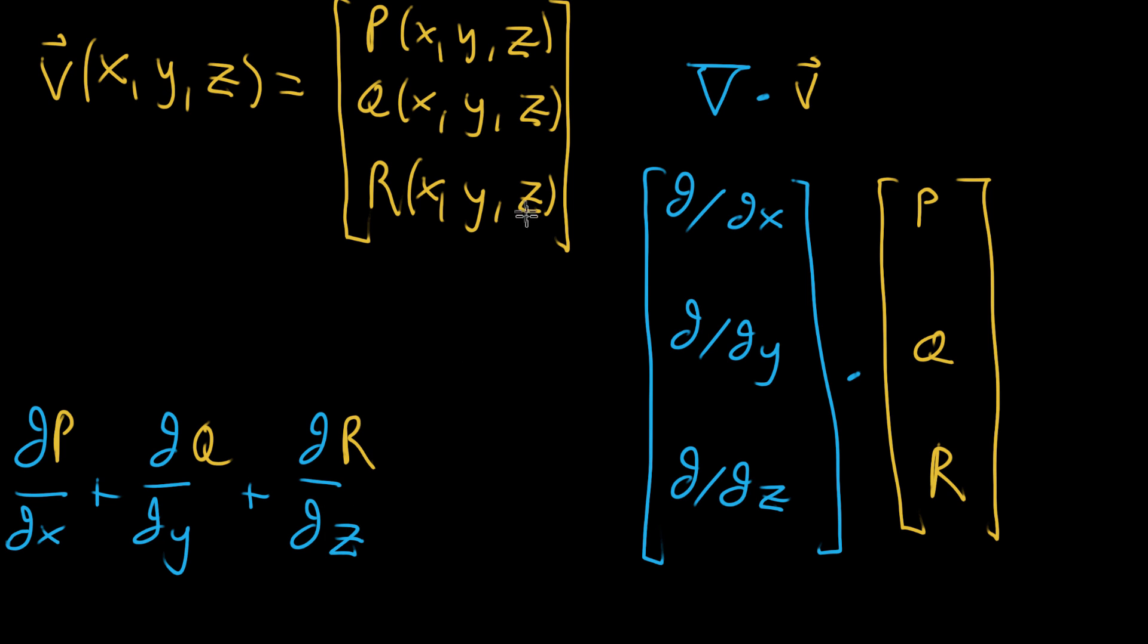And since I haven't talked about three-dimensional vector fields, or three-dimensional divergence, this last term, maybe it's not a given that you'd have as strong an intuition for why this shows up in divergence as the other two, but it's actually quite similar. You're thinking about changes to the z component of a vector as the value z of the input, as you're kind of moving up and down in that direction changes.